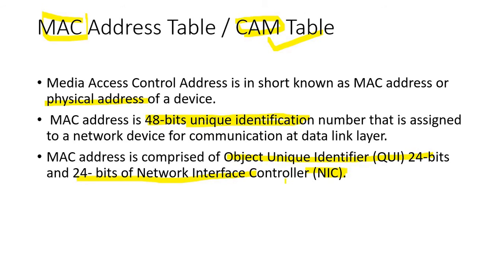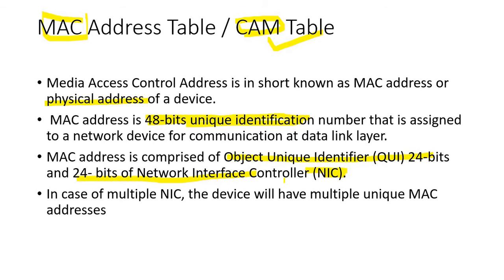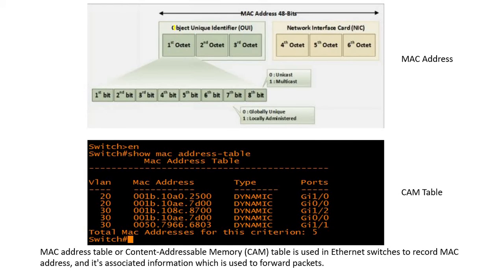Here is a question: if there is one device with two NICs, will the MAC addresses be the same or different? The MAC addresses are going to be different, because we have multiple NIC cards and for each one it will be different. Now looking at the structure, the OUI covers the 1st, 2nd, and 3rd octets, and the NIC covers the rest. The 7th bit indicates globally unique (0) or locally administered (1). Similarly, the 8th bit is 0 for unicast and 1 for multicast.